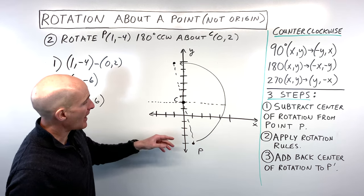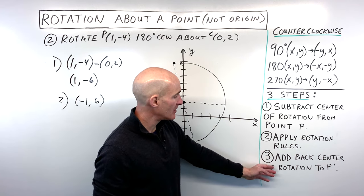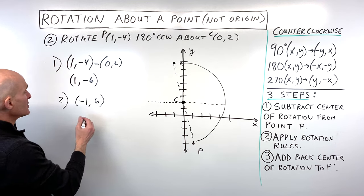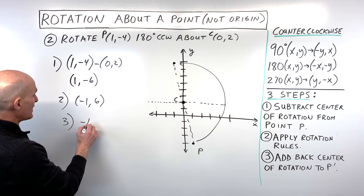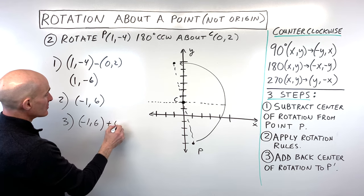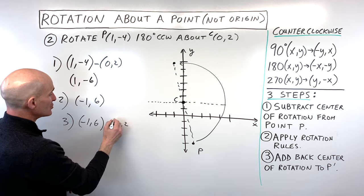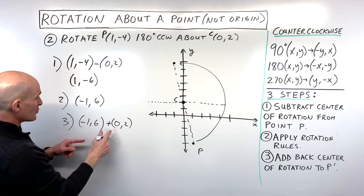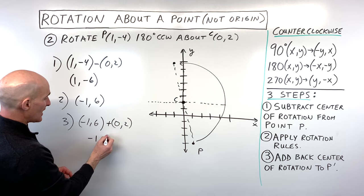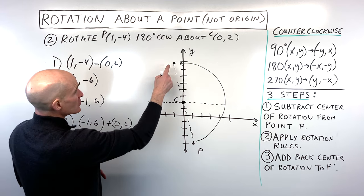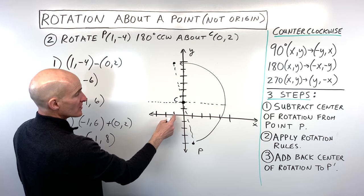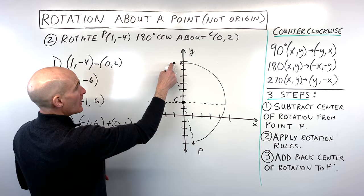For the last step, we add back the center of rotation to that point. So we take (-1, 6) and add (0, 2): -1 plus 0 is -1, and 6 plus 2 is 8. You can see that's where the point is located from the original origin — left 1, up 8.